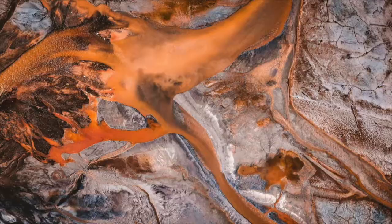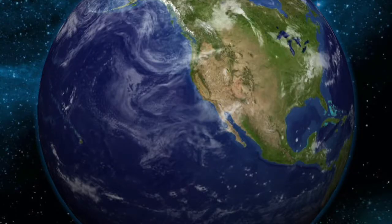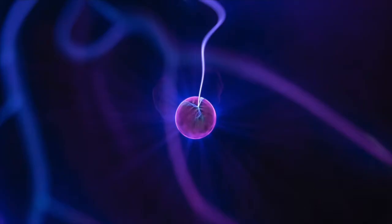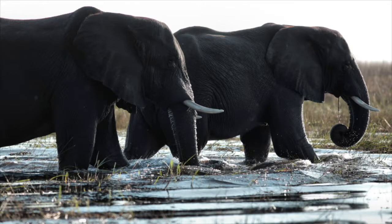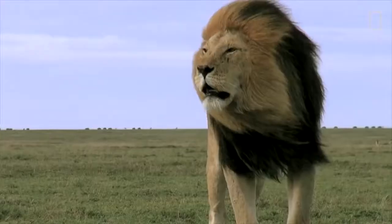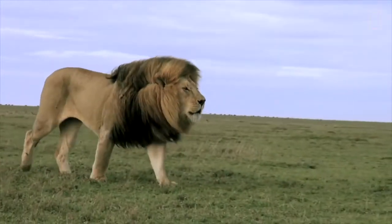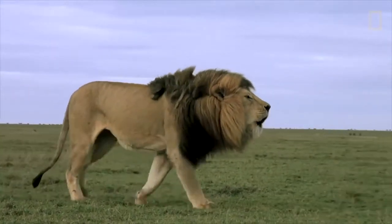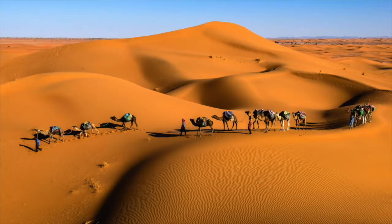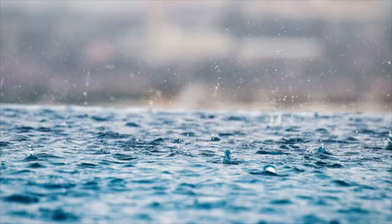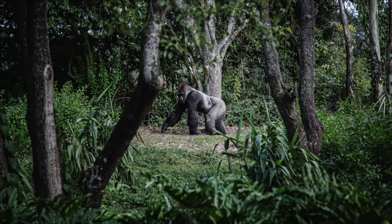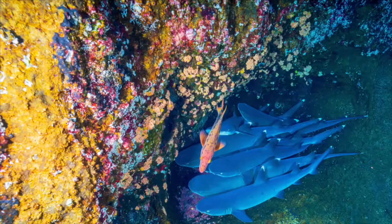Biodiversity is the variety of all living organisms on Earth and is broken down into ecosystem diversity, species diversity, and genetic diversity. Biodiversity is essential for the balanced function of all living ecosystems, as each organism is dependent on one another for survival. An ecosystem is a part of the environment that contains living organisms that interact with each other and the non-living parts of their physical environment. There are many different ecosystems that vary in temperature, rainfall, and living organisms, such as the savannah, rainforest, tundra, reef, and desert.